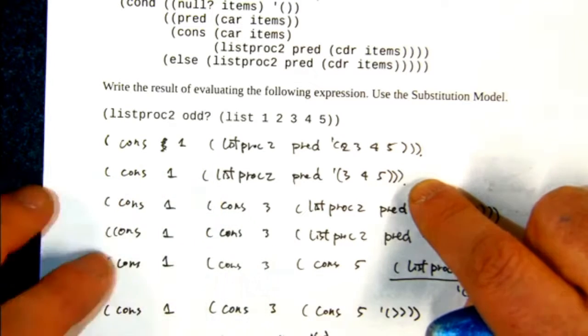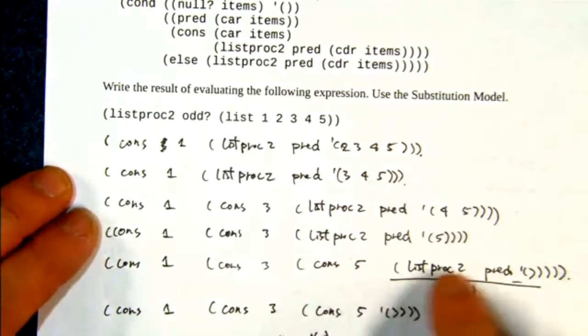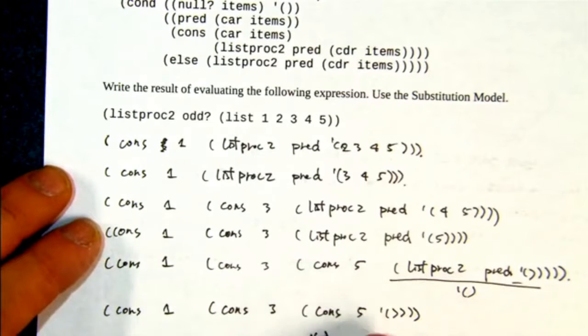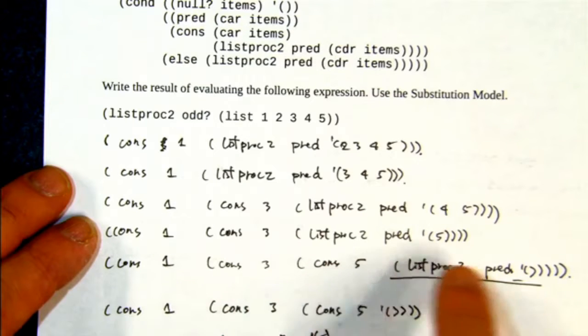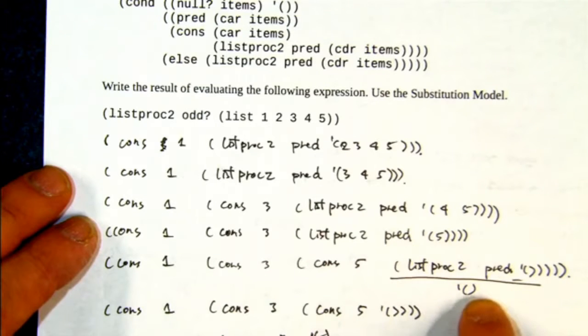And so on. And so what ends up is all these recursions. The last recursion is a cons of one, cons three, cons five, that will return empty list, and then the cons is on one and we get this.